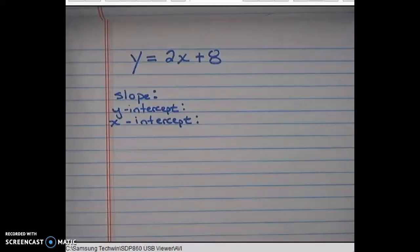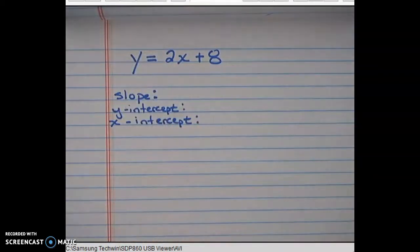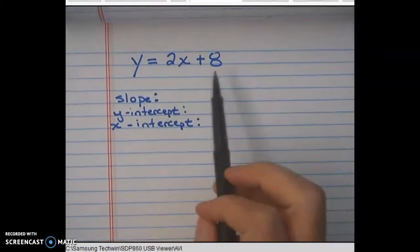All right everybody, let's take a look at the question that we have in front of us. It tells us the equation y equals 2x plus 8, which is in slope-intercept form currently. We know it's in slope-intercept form because it starts y equals. And it's asking us for three of the most important characteristics: slope, y-intercept, and x-intercept of this equation right here.